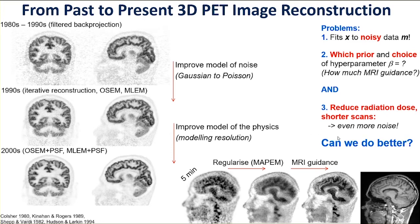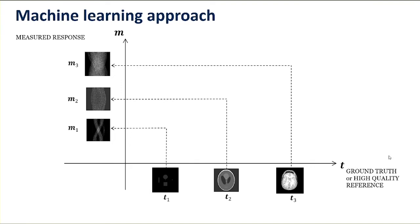Hence the question: can we do better? It does indeed seem like by using artificial intelligence or machine learning or deep learning, we can. So what is it behind machine learning that makes the difference to these conventional reconstruction methods? At the core of machine learning is the use of training set data — a huge database, perhaps hundreds of thousands of example radiotracer distributions — along this kind of x-axis here. These are the high-quality or ground-truth reference images for which we assume we have knowledge of noisy measured data, found by simulation or by high-count scans.